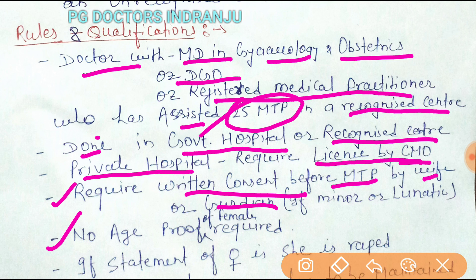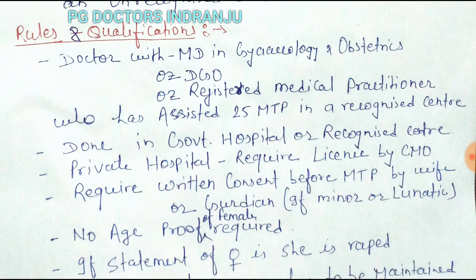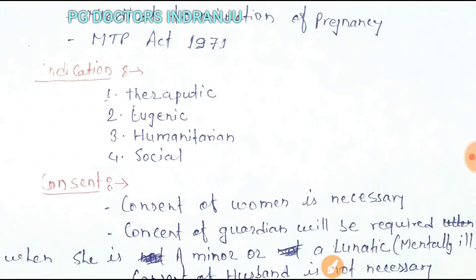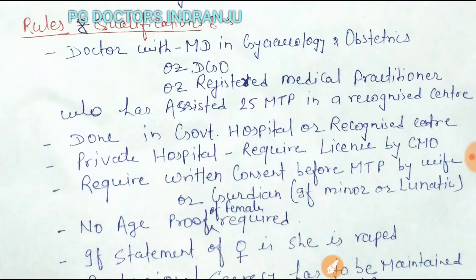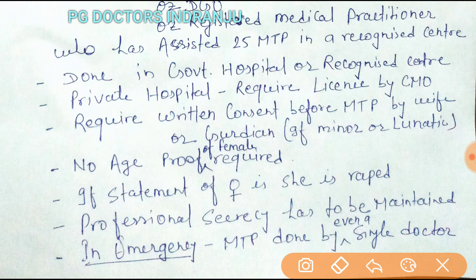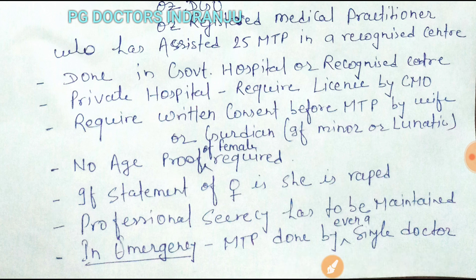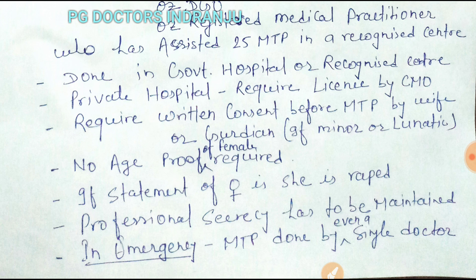There is no proof required for MTP if the four criteria — therapeutic, eugenic, humanitarian, and social — are fulfilled. If a woman states that she has been raped, there is no requirement of a police case or any formal complaint. The statement of the female alone is sufficient to fulfill the humanitarian criteria.